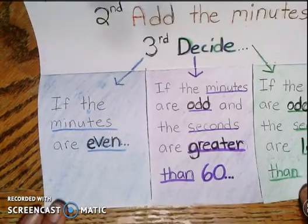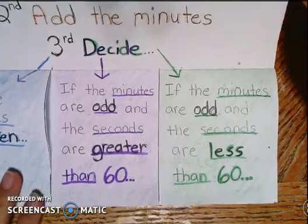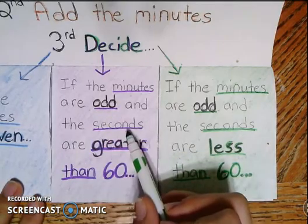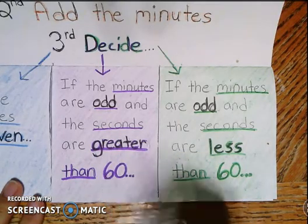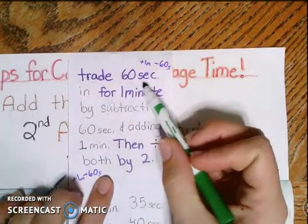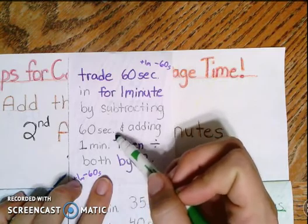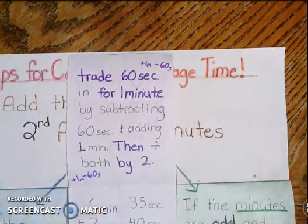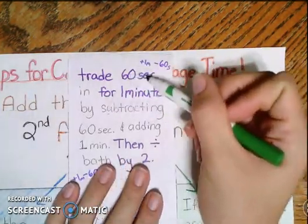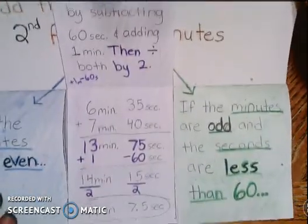All right, but what about if the minutes aren't even? What about if the minutes are odd? Well, then I have another decision to make. So if the minutes are odd and the seconds are greater than 60, then I'm going to do this option. Then I'm going to trade 60 seconds in for one minute by subtracting 60 seconds and adding one minute. And then I'll divide them both by two. I'm going to do this option because I have enough seconds to trade them in for a minute and make my minutes even.